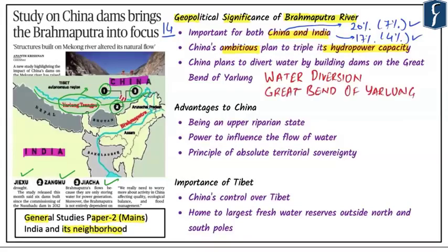For the prelims examination, it is important to know that at the location of the great bend of Yarlung, the river curves into Assam's plains in India. The Brahmaputra or Yarlung Tsangpo enters India after passing the great bend through Arunachal Pradesh, where it is known as Siang or Dihang, then flows into Assam where it is called Brahmaputra, and thereafter into Bangladesh where it is named Jamuna.